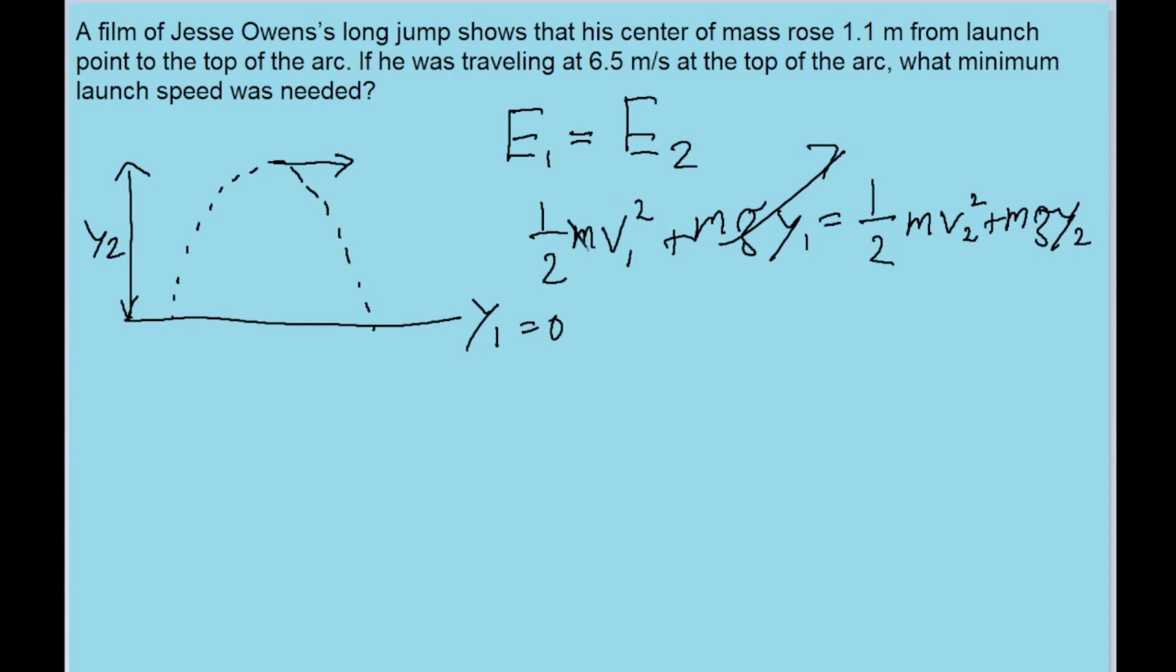And since there is mass in every single term, we can simplify this equation a bit by canceling all the masses out. So we're left with the equation one-half of V1 squared is equal to one-half of V2 squared plus G times Y2.